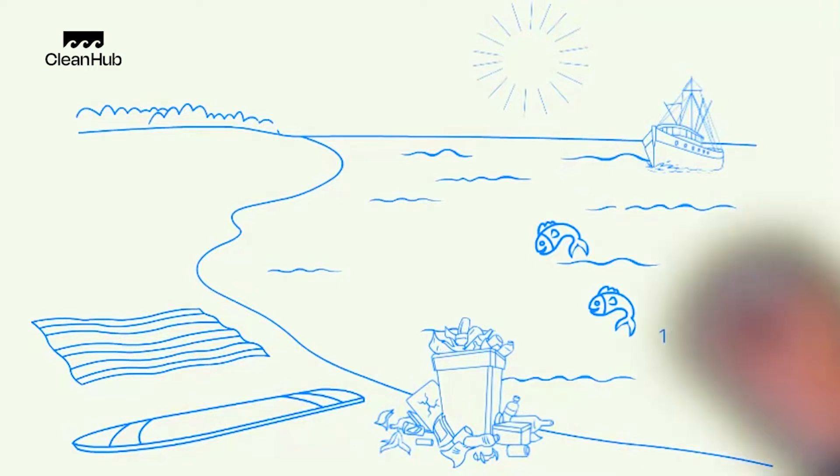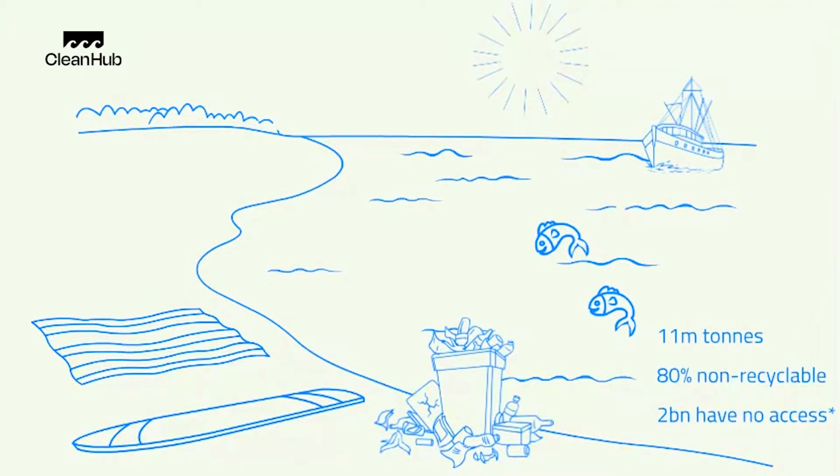Let's start at the beginning. These are the three big insights that prompted us to take action. 11 million tonnes of plastic enter our oceans every year. 80% of that is non-recyclable plastic and 2 billion people around the world don't have access to effective waste management systems.